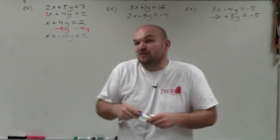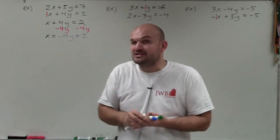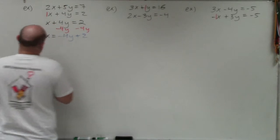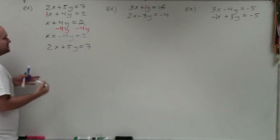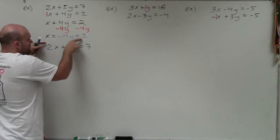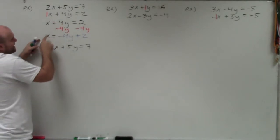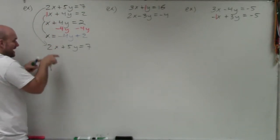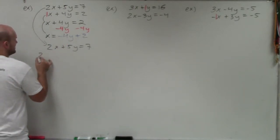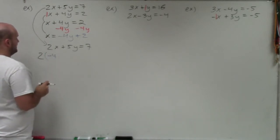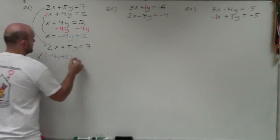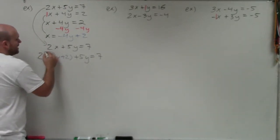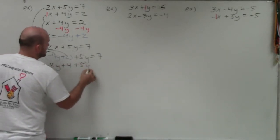To find the solutions, we need an equation in only terms of x or only terms of y. So I'm going to go to the equation I haven't touched yet — 2x plus 5y equals 7 — and replace x with negative 4y plus 2. Plugging in gives: 2 times the quantity negative 4y plus 2, plus 5y equals 7. Applying the distributive property, I get negative 8y plus 4 plus 5y equals 7.